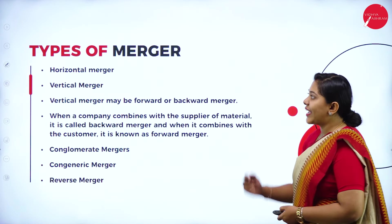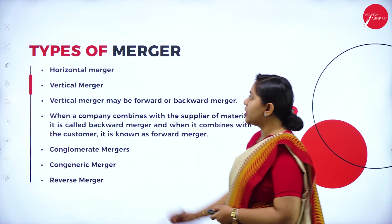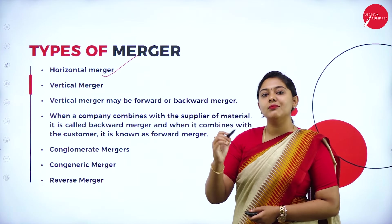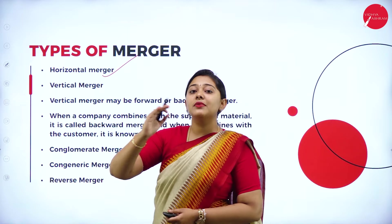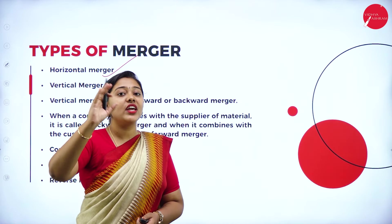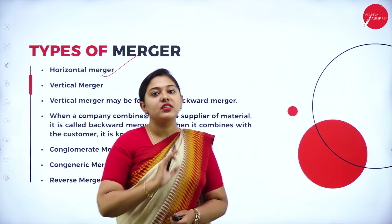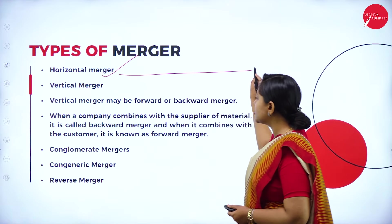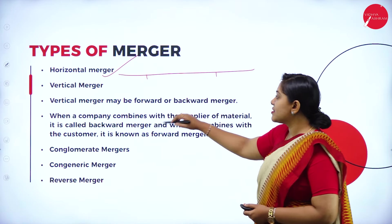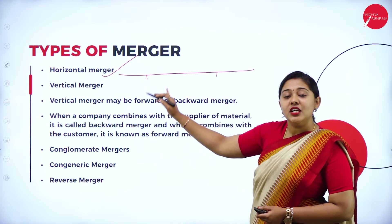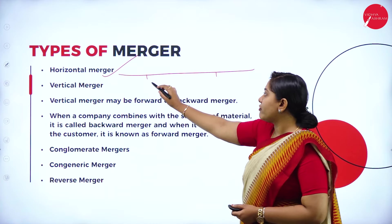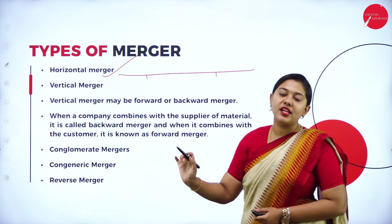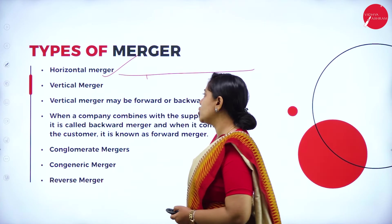Moving forward — types of merger. We have horizontal merger. Horizontal merger is a merger where similar business activities combine. For example, an FMCG company merging with another FMCG company is a horizontal merger — same business line merging together.